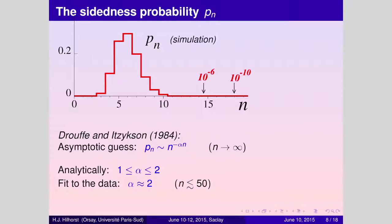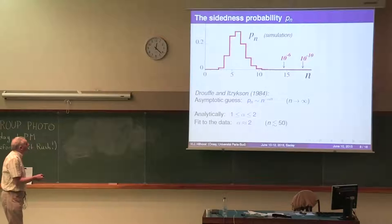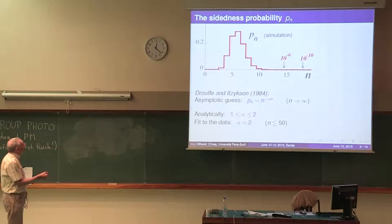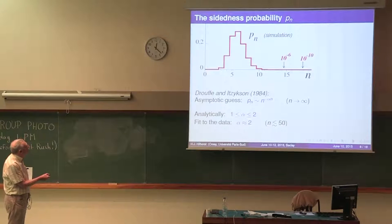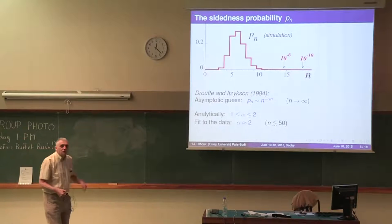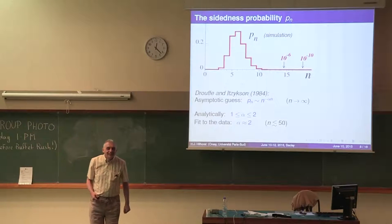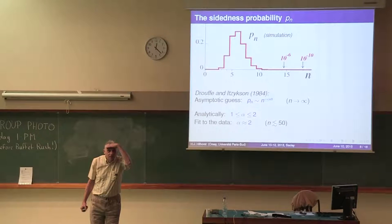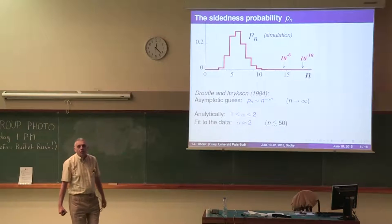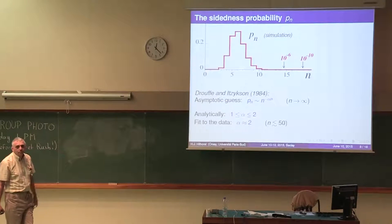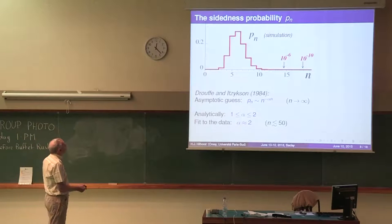You can make on the basis of simulations a histogram of the number of sides of a Voronoi cell. The histogram peaks at six. In fact, six is the exact average. And then it goes down very rapidly for high values of n. There's a question: how are you picking the cell? Are you picking a random point in the plane or a random point from your Poisson process? A random cell. All cells with equal probability.